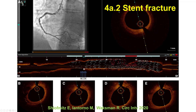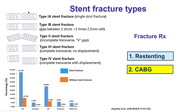The other type of mechanical failure is stent fracture, which is seen as a gap between the stent. Here, the distal segment is far away from the proximal segment, and it can be of various types. The typical treatment is with repeat stent placement or, if that fails, with coronary bypass graft surgery.